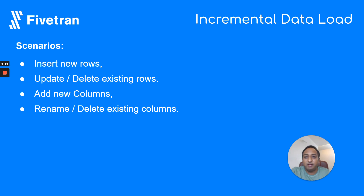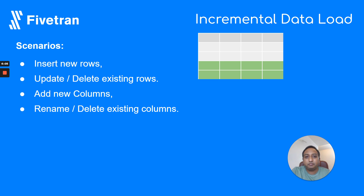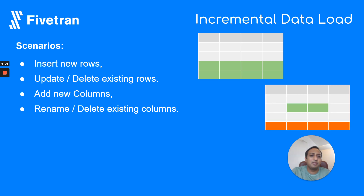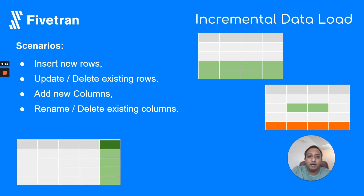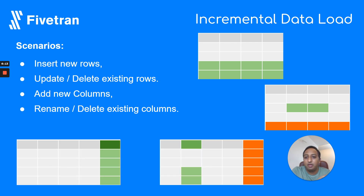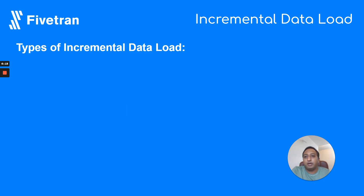At the same time, let's say we are renaming or deleting existing columns. How does Fivetran enable the data warehouse to handle these scenarios? This pictographic representation covers adding new rows, updating rows, deletion of rows, adding a new column, and deletion of a column.